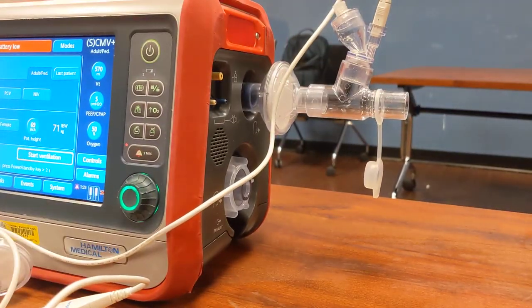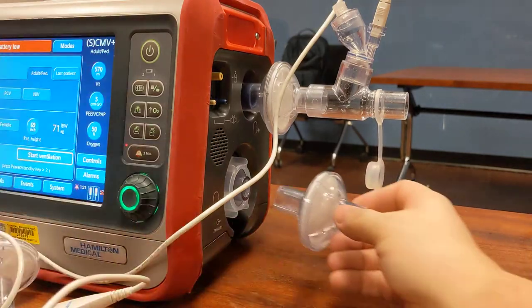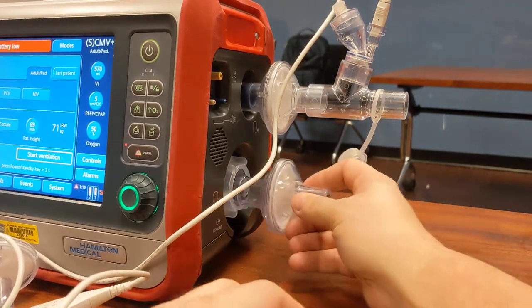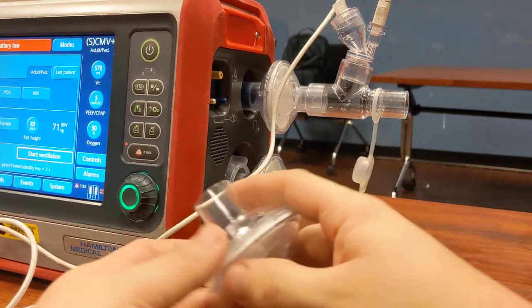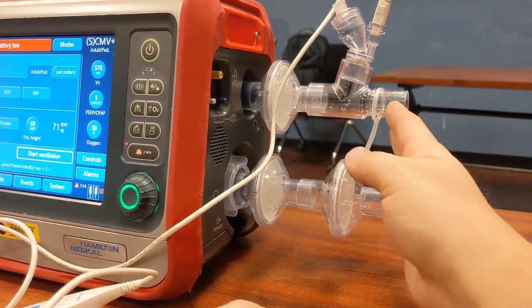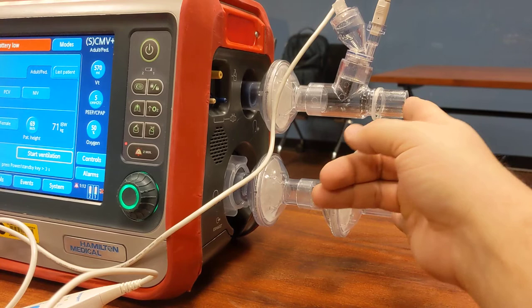So that goes in just like that. And then we're going to place two filters here on the expiratory valve. And this actually does two things. One, it creates an even platform so we'll be able to hook up our coax circuit.